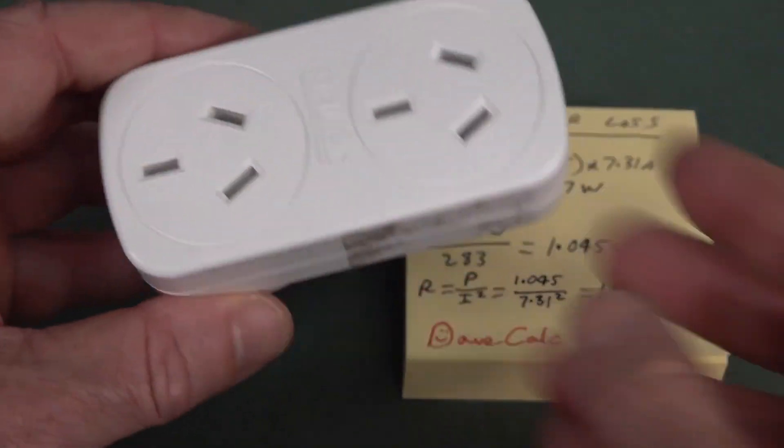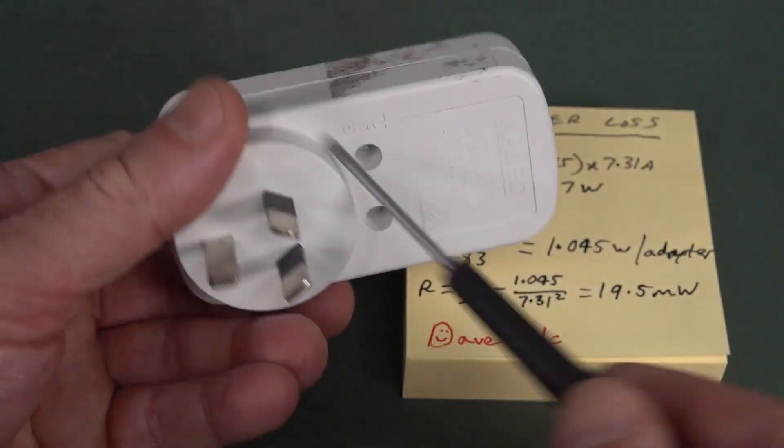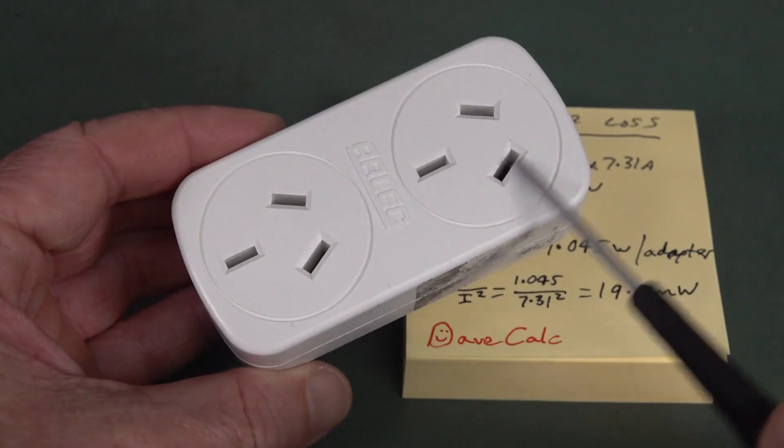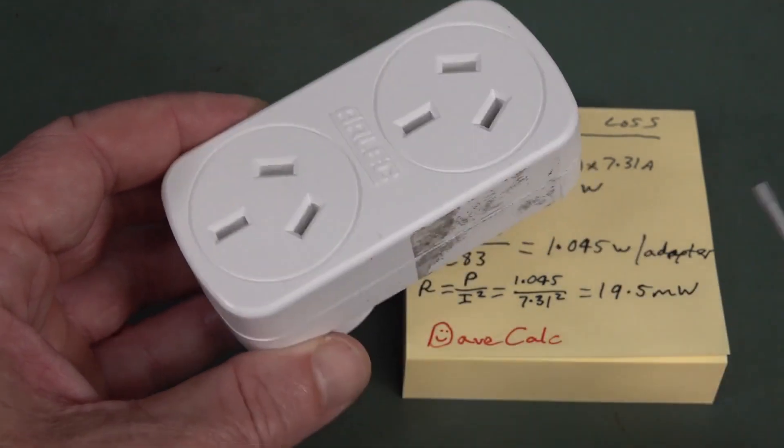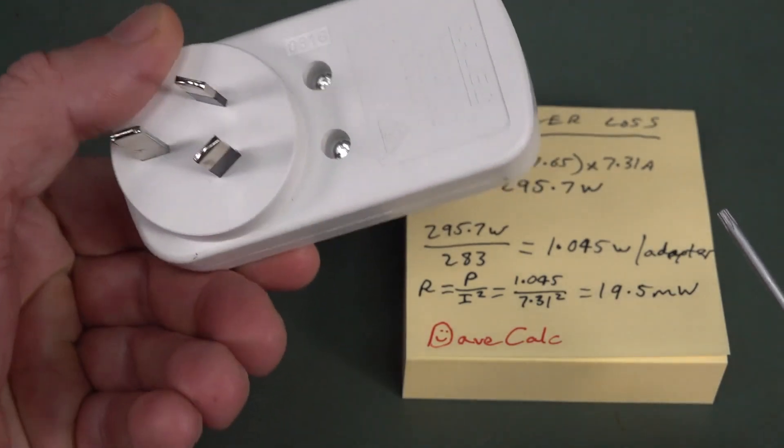So that's going to get toasty warm, and it's coincidentally not far off. Basically one watt for each one of these double adapters. The total power divided by the number of adapters, 283, 1.045 watts. Just call it one watt loss per double adapter like this. So, yeah, let's crack this open and see what's inside. Whether or not they use discrete wiring or whether or not they use like a brass contact piece. That'd be my guess, but you never know. Anyway, it's got those weird security thingies in there.